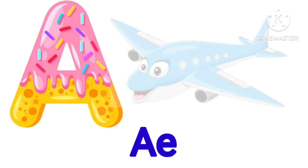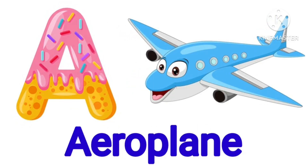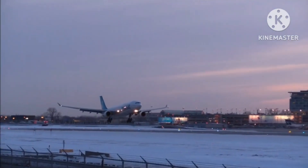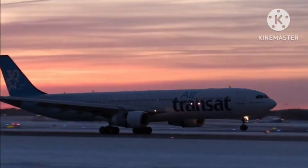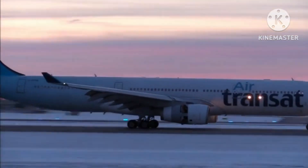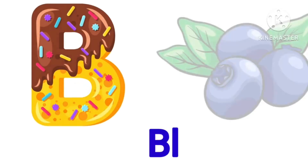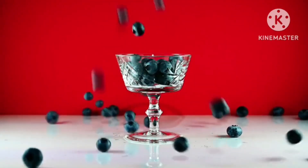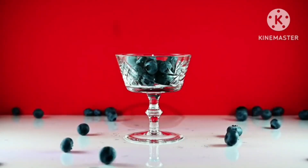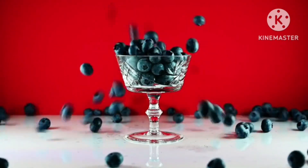A is for aeroplane. Come on, let's say it once again — A is for aeroplane. B is for blueberry. Yes, say with me again — B is for blueberry.